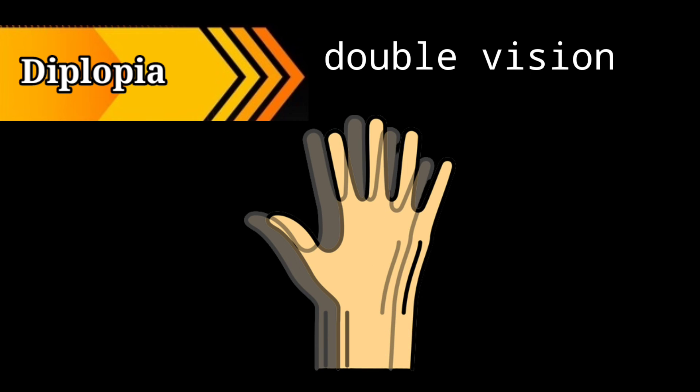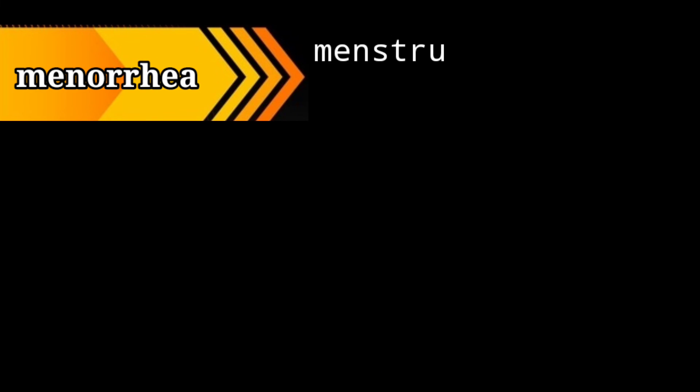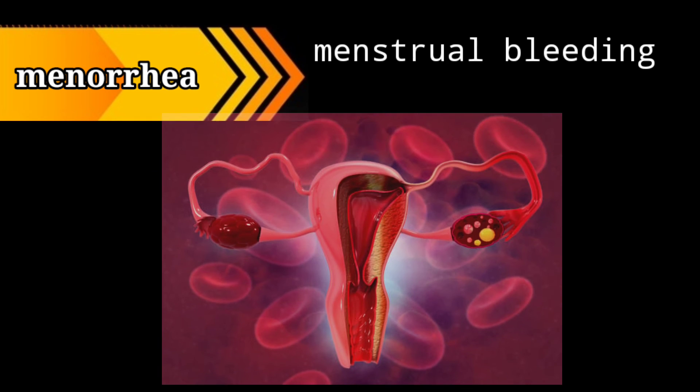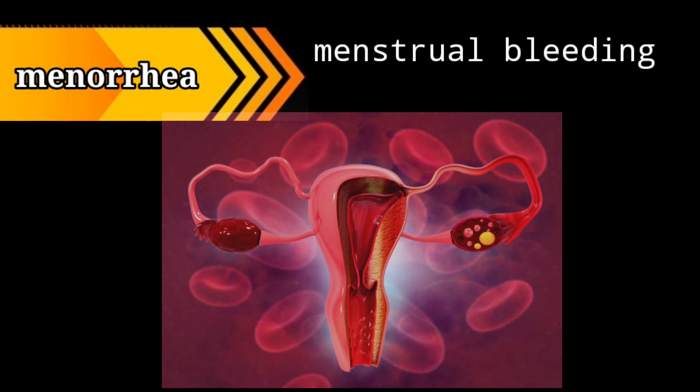Diplopia: double vision. Menorrhagia: menstrual bleeding — it occurs once a month.